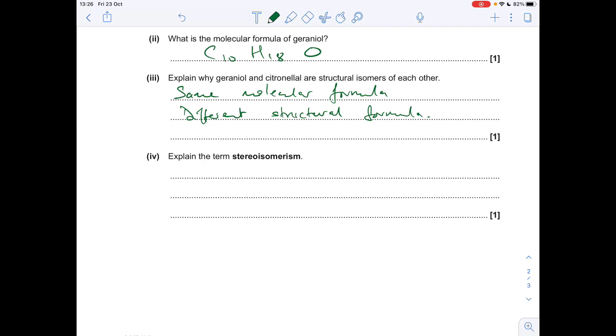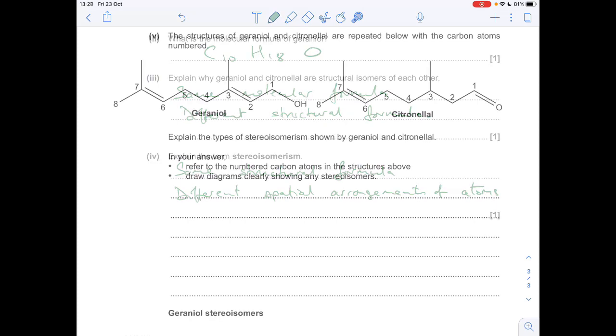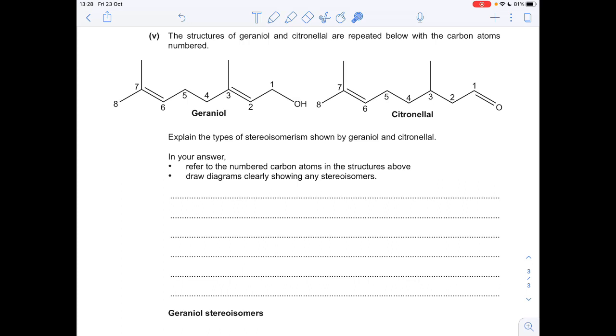And likewise, for the next part, we've just got to give the definition for stereoisomerism. So we'd need to say this. So that's the same structural formula, but a different spatial arrangement of the atoms. Last part of the question, explain the types of stereoisomerism shown by both of these compounds. Got to refer to the numbered carbon atoms and draw diagrams.